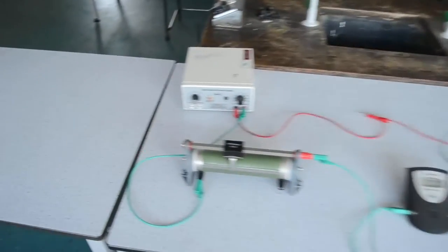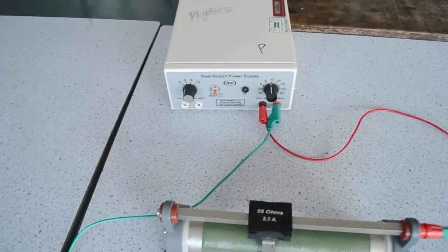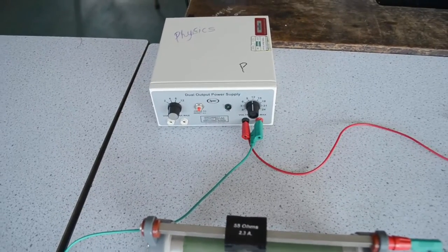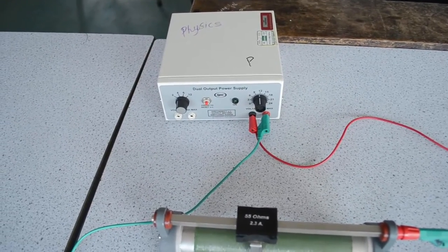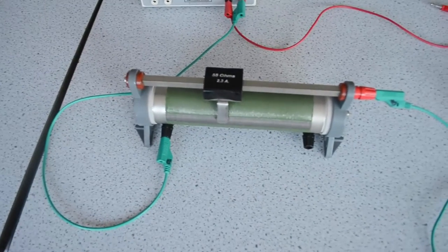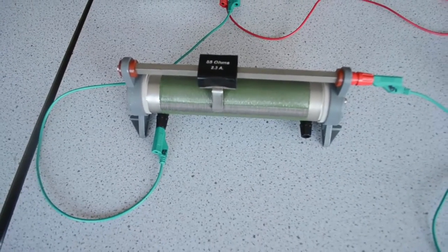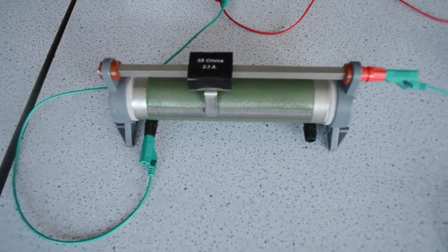So let's have a look at the equipment we have here. Here we have a power supply. The voltage there I've set to 12 volts and I'm not going to change that because I've connected it to a variable resistor, a rheostat here.